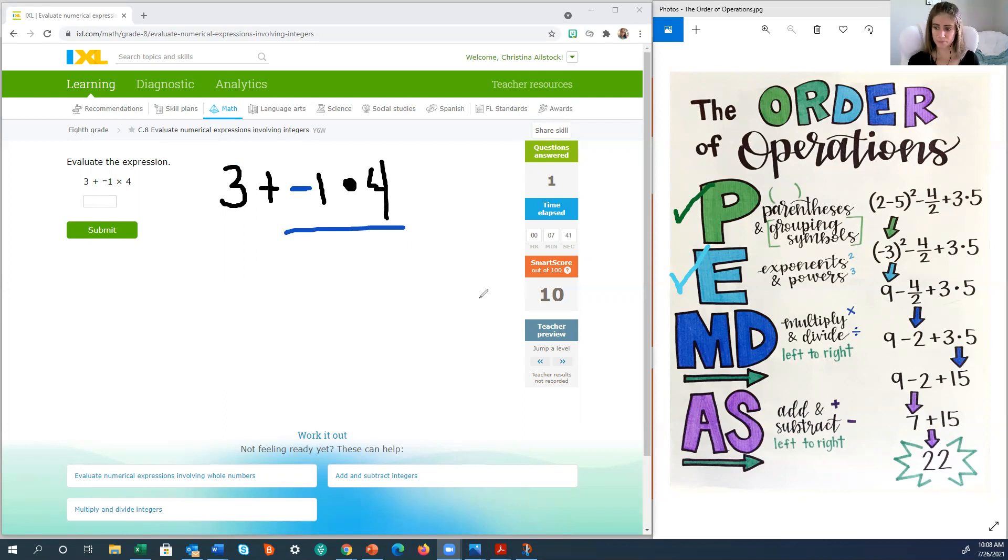When you're multiplying, remember that if your two numbers, if their signs are the same, so they're both positive or they're both negative, then your answer will be positive. When you're multiplying, if they have opposite signs, like I do here, one number is negative and one number is positive, then your answer will be negative.